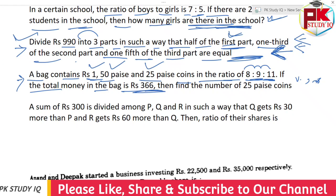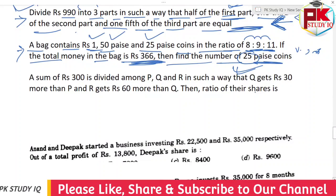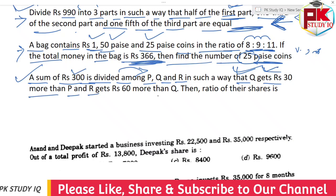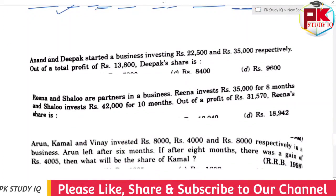If the total money in the bag is Rs. 360, find the number of 25-paise coins. This is a very useful revision. The sum of Rs. 300 is divided among P, Q and R such that Q gets Rs. 360 and R gets 60 more than Q. Then find the ratio of the share. This is a very easy question but we will do the description and technical method.